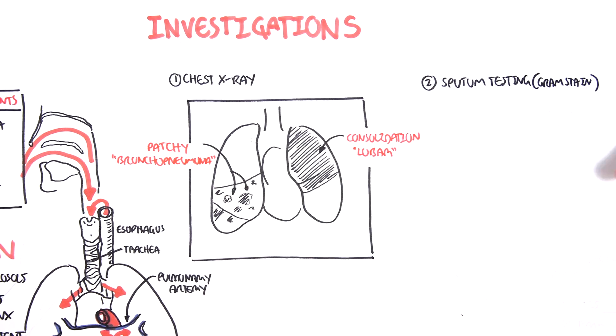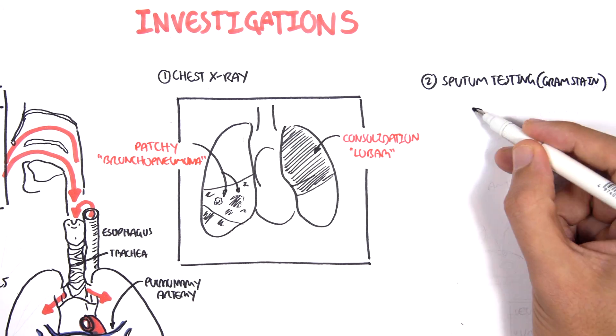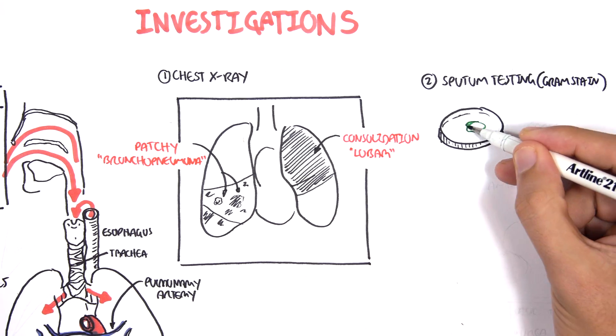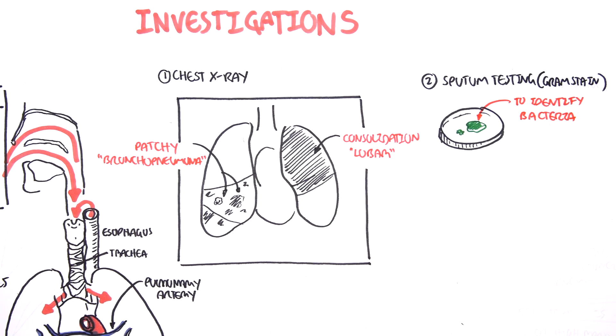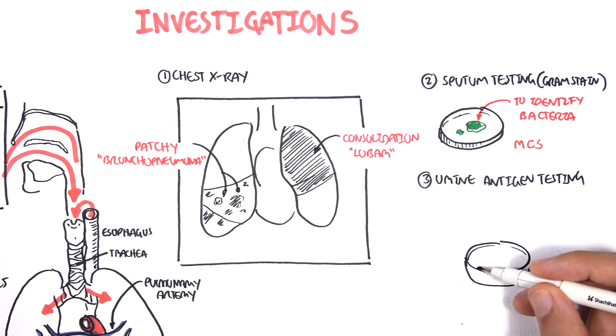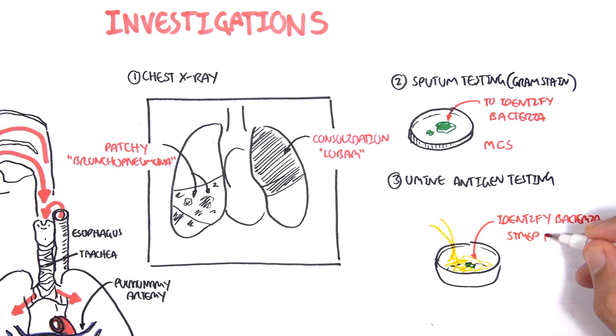Another investigation is sputum testing, gram stain, to identify the bacteria, using microscopic culture and sensitivity testing. You can also perform urine antigen testing to identify the bacteria, streptococcus pneumoniae, or legionella, in case it has spread or is a result of a UTI.